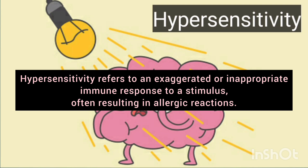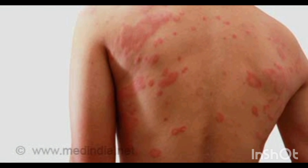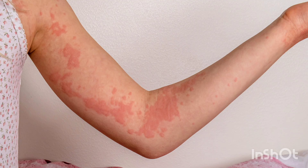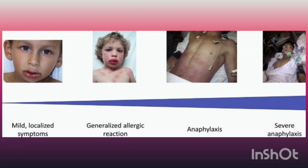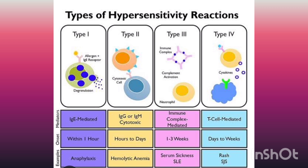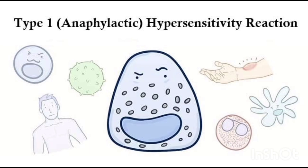It often causes allergic reactions with symptoms like urticarial rashes, redness, swelling, and itching resulting in inflammation. Respiratory symptoms can occur and it can even lead to life-threatening conditions such as hypoxia and hypotension, as well as organ damage which can lead to death.